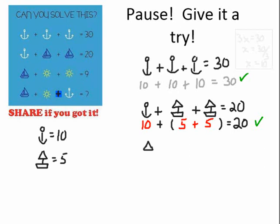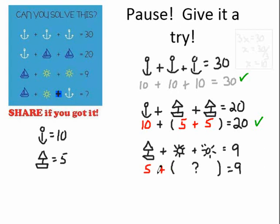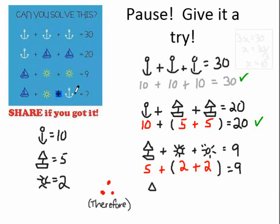So far we know an anchor is 10 and a sailboat is 5. This is all called logic, and you've got to be slow and methodical. We know the sailboat's 5, so 5 plus those two sun symbols must be worth 4 together, which means they're 2 each. So a sun is 2. Now let's solve the final line: a sailboat plus a sun plus an anchor — that's 5 plus 2 plus 10, which is 17.